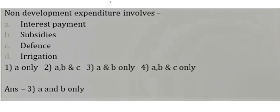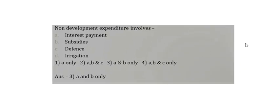The next question involves non-development expenditure. There are two types of expenditure: development expenditure and non-development expenditure. Development expenditure generates future benefits, such as spending on irrigation. Non-development expenditure includes interest payments and subsidies. Options A and B — interest payments and subsidies — are the correct answers.